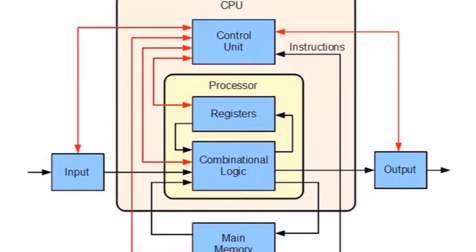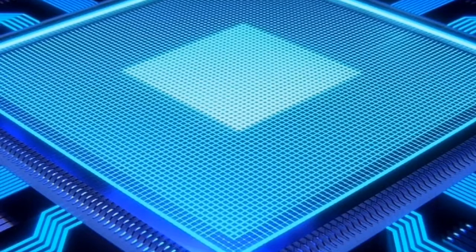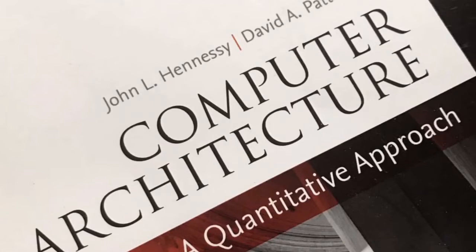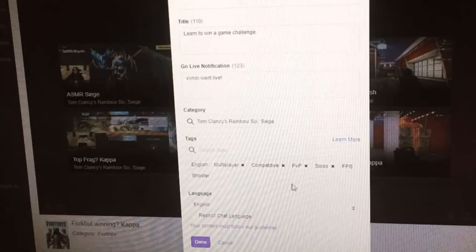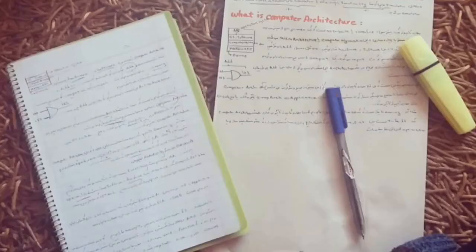We move from high-level language to low-level language using a compiler. The next step involves the register store. In the processor, there is a RAM register. In the computer, there are 32-bit and 64-bit registers. The register is the initial store and it performs arithmetic and logic operations, such as addition. Values are stored in the register and output is displayed.